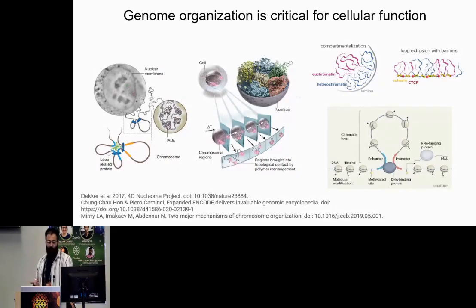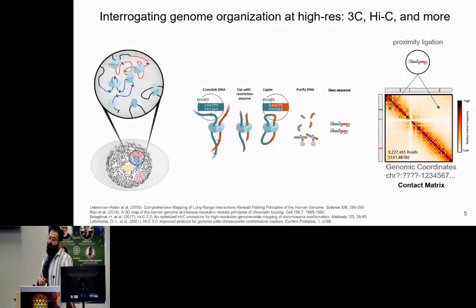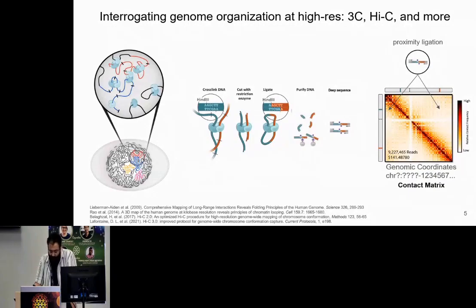We refer to these methods generally as 3C — Chromosome Conformation Capture — and additionally we have a high-throughput one called Hi-C. The way it works is: first you cross-link the DNA, then you do a restriction digestion, then you ligate your restriction fragments, amplify the DNA, and send for deep sequencing.